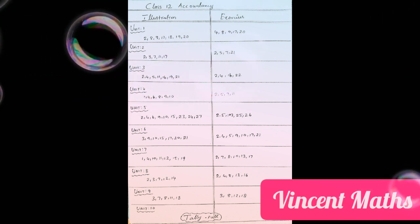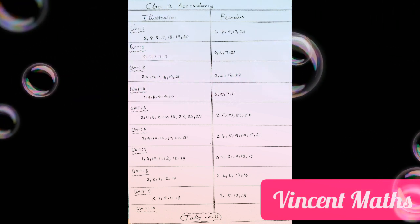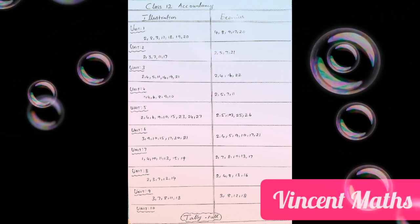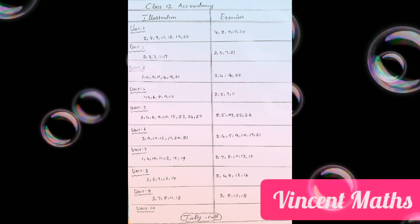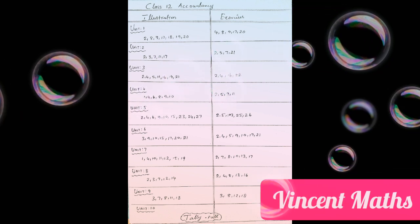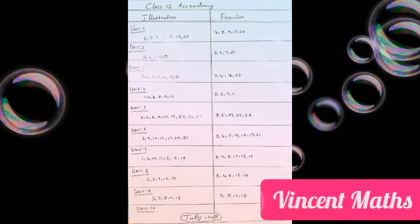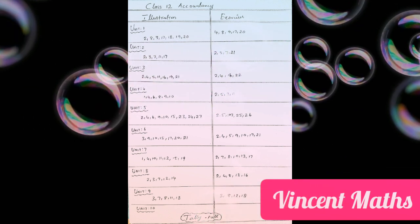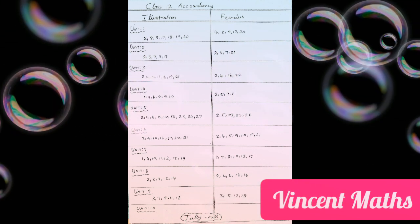2nd unit — the most important information is: 2nd, 1st, 3rd, 7th, 11th, and 17th.